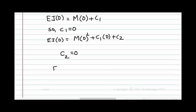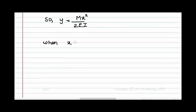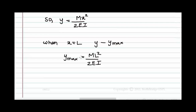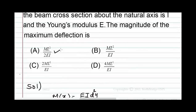Substituting C₁ = 0 and C₂ = 0, we get EI·y = Mx²/2, so y = Mx²/2EI. When x = L, y = y_max, therefore the maximum deflection is y_max = ML²/2EI. The correct option is Option A: ML²/2EI.